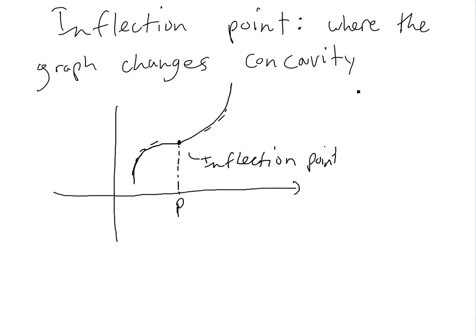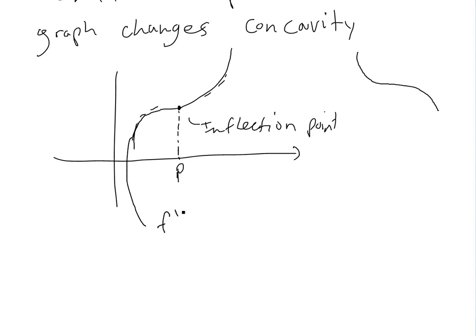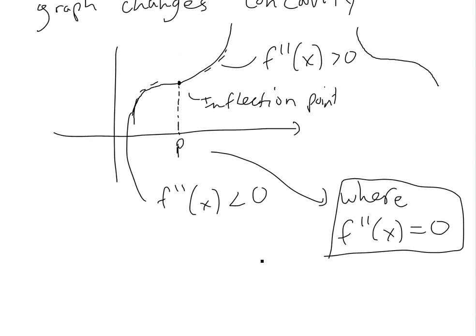Similarly, you could have it the other way — concave upwards to downwards. In this example, in the area where it's concave downwards, f double prime of x is less than zero. Then where it becomes concave upwards, f double prime of x is greater than zero. So the inflection point is where f double prime of x equals zero — that's where the inflection point is and how we can find it.